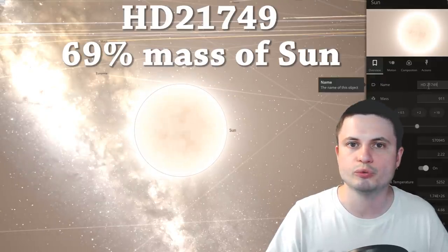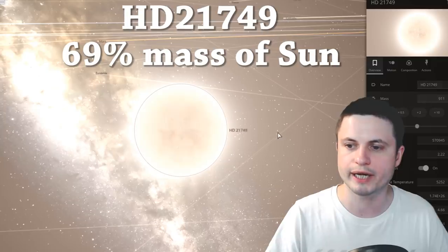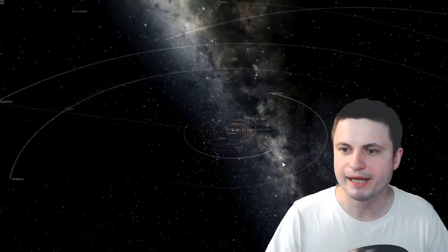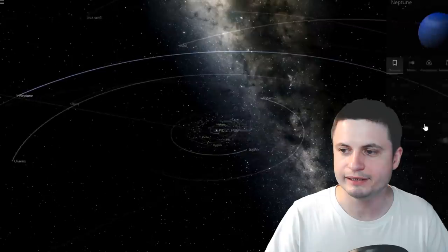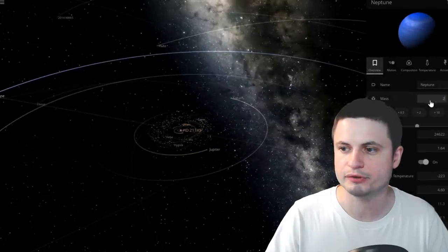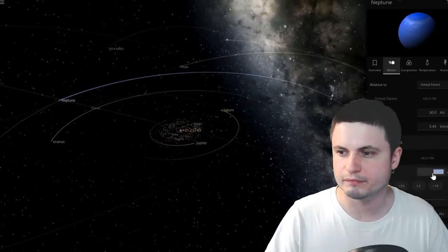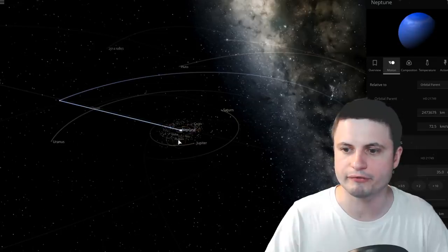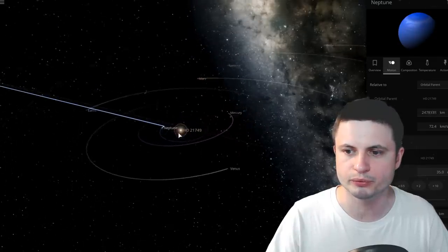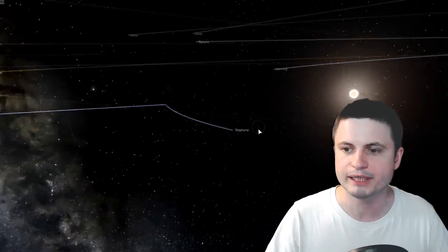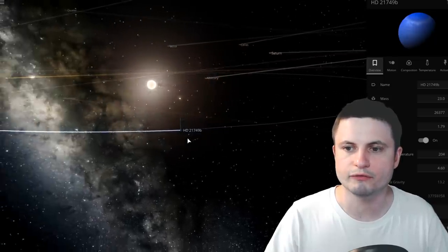There are two planets that have already been discovered here. The first planet was discovered a few months ago and it's essentially a Neptune-like object. It has a mass of about 23 masses of earth, so it is in a sense very similar to Neptune, a little bit more massive. It's much closer to the star itself because a single orbit here takes approximately 35 days. It's way closer to the main star. So there is our new Neptune. This is a planet known as HD 21749b.